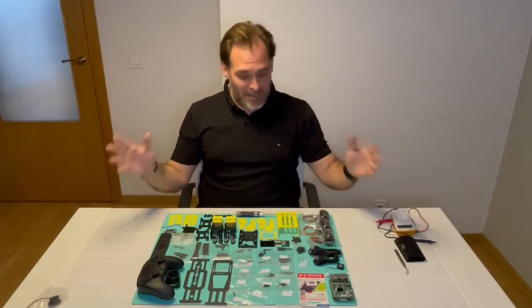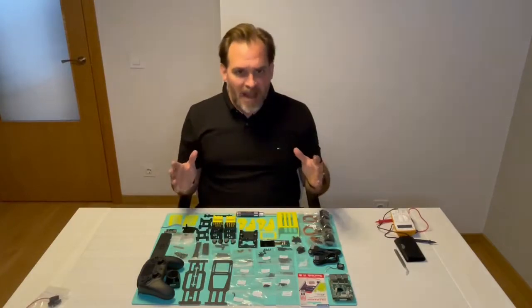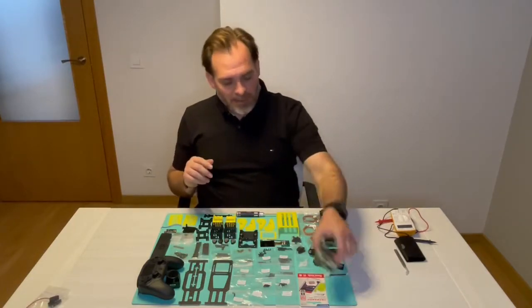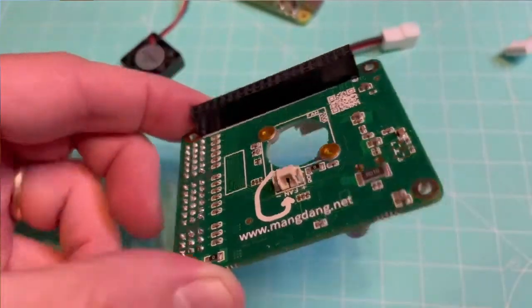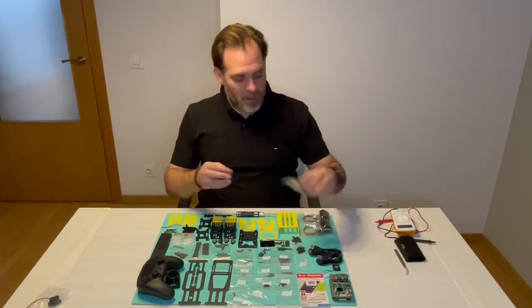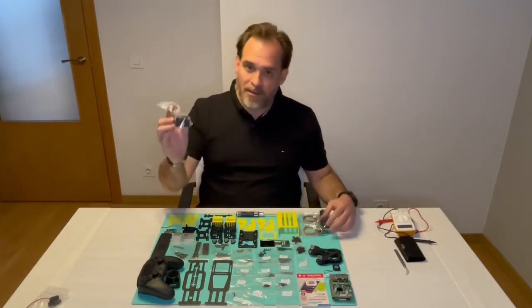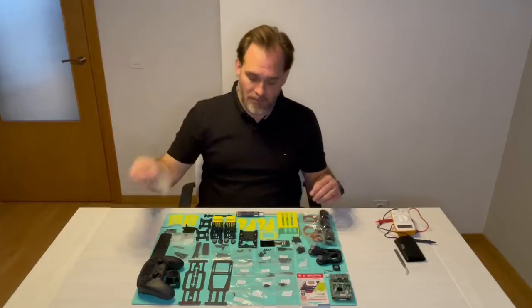Okay, so now that everything is sorted, there is a lot of stuff here. Starting with the Raspberry Pi 4, with the custom hat, as we mentioned before. This little fan. Cables. These are the custom-made servos. 12 of them, plus one extra.